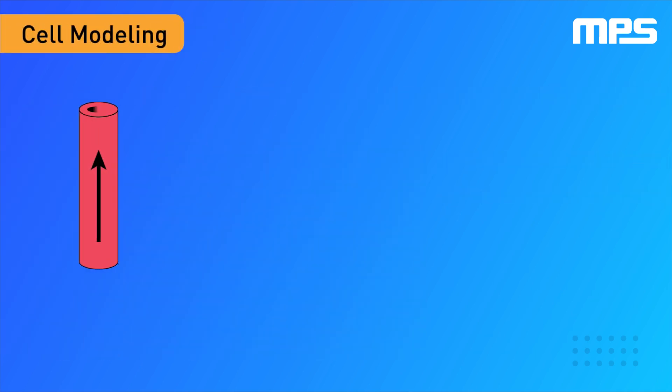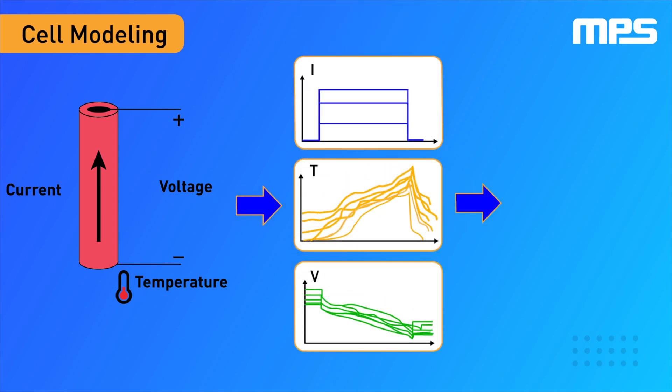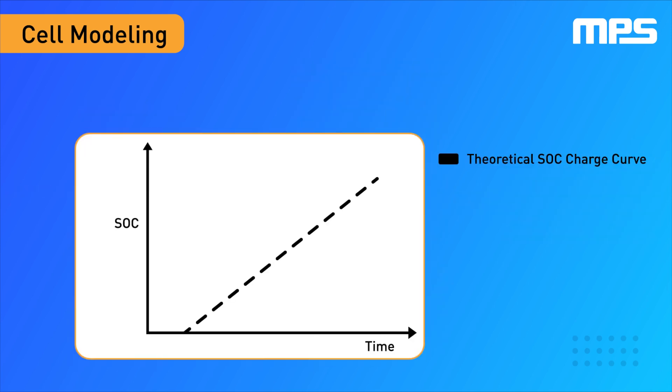Another method is to use a cell mathematical model that captures the cell's most important dynamics. This model is generated from charge and discharge tests under many conditions to estimate the SOC. The main advantage of this method is that it enables convergence with the true SOC by using current, temperature, and voltage measurements that provide feedback and correct estimation errors. However, the model is far from ideal, with SOC and accuracy varying under different scenarios.